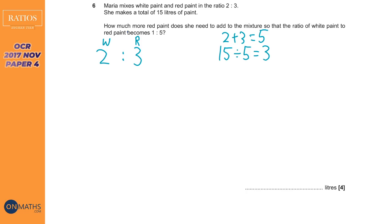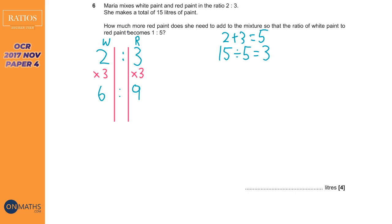We're going to multiply both of these numbers by three. So two times three is six and three times three is nine. If we write it as a ratio of six to nine — which is the same as the ratio of two to three — six plus nine equals the 15 in the question.